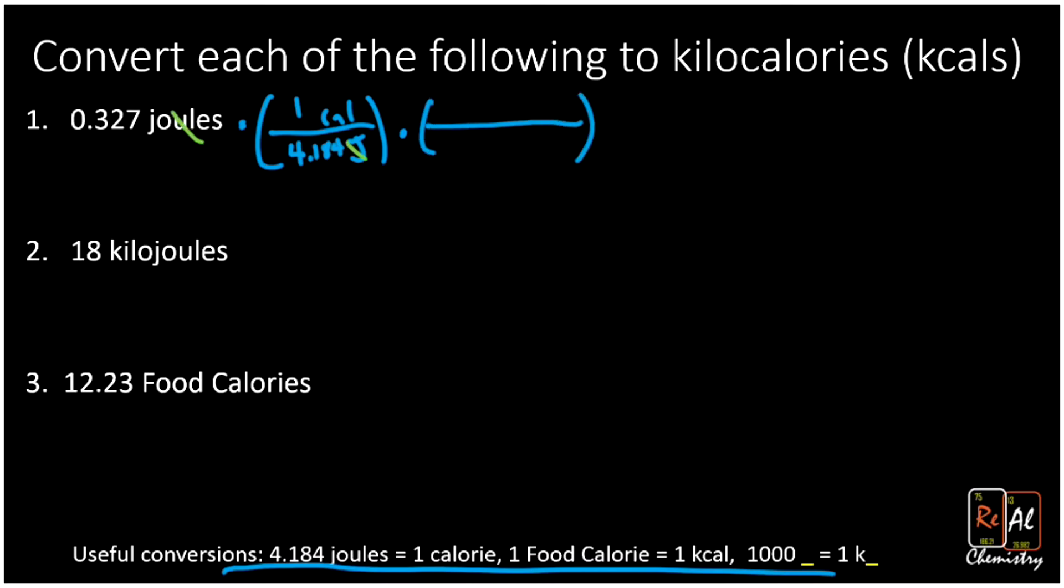That will put us out of joules into calories. And then we need to go to kilocalories, so we want to go to kcals and cancel out calories. And remember there's a thousand of the whatever in one kilo-whatever. And then I type that on my calculator. When I do that, I'm going to put 0.327 divided by 4.184 and then divided by a thousand.